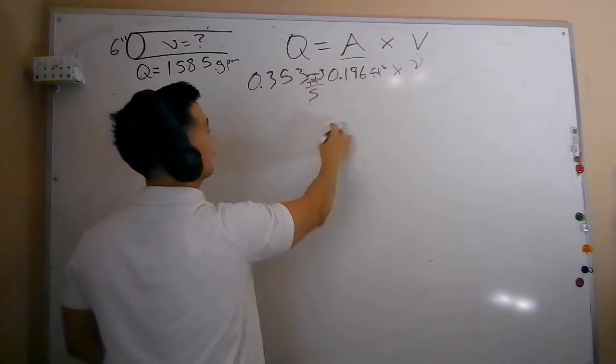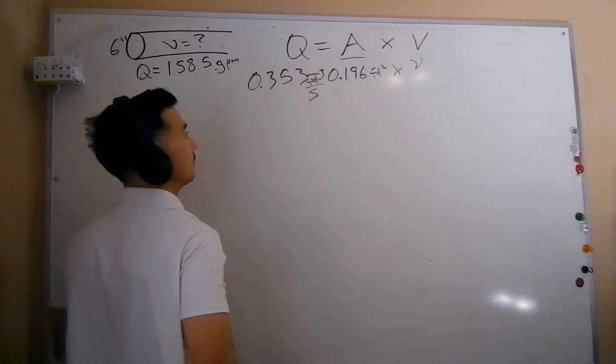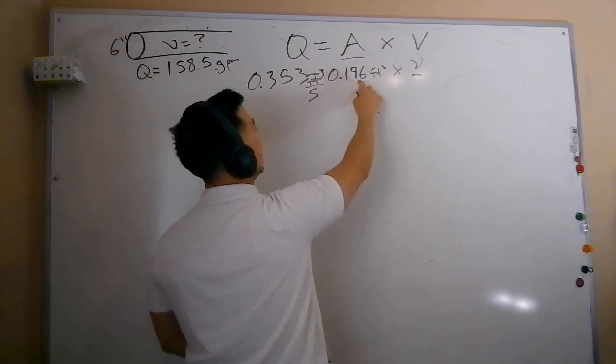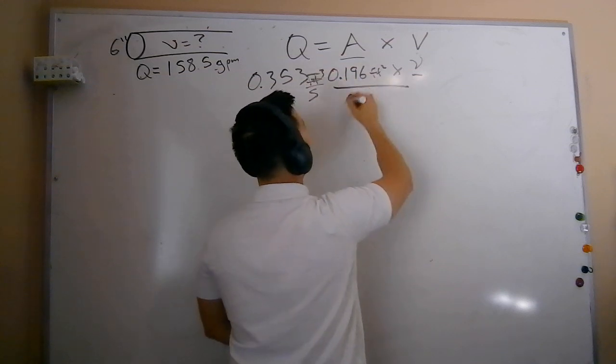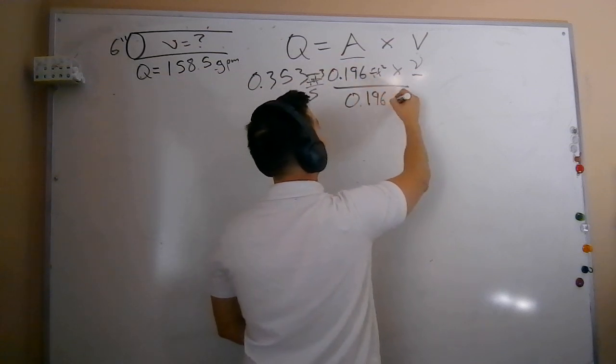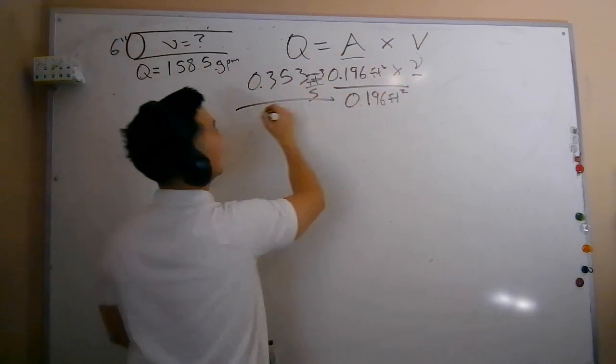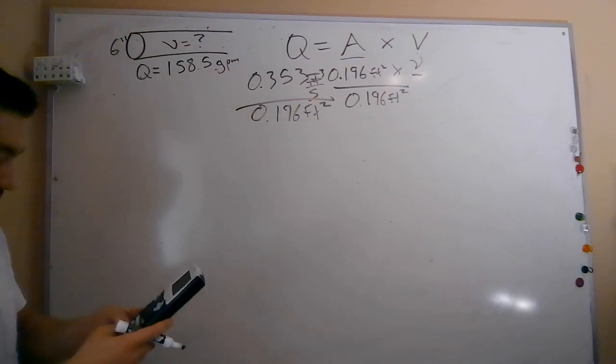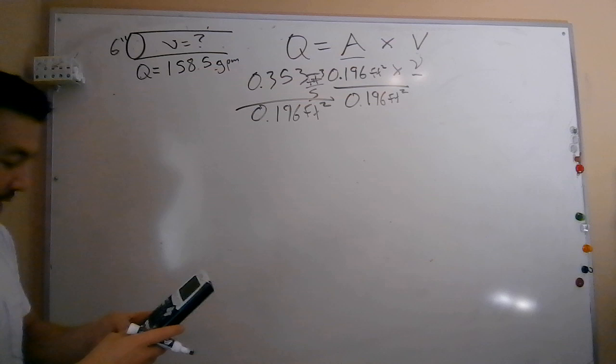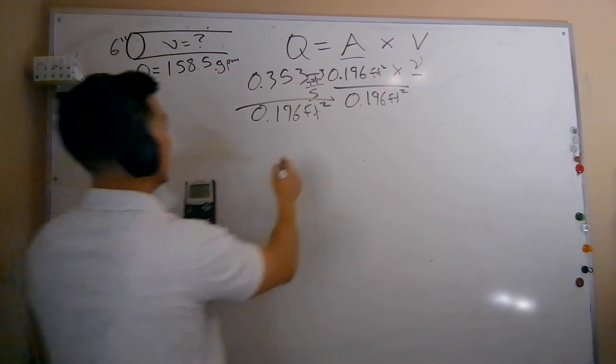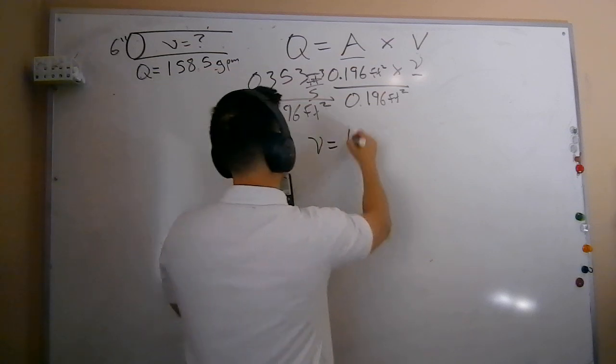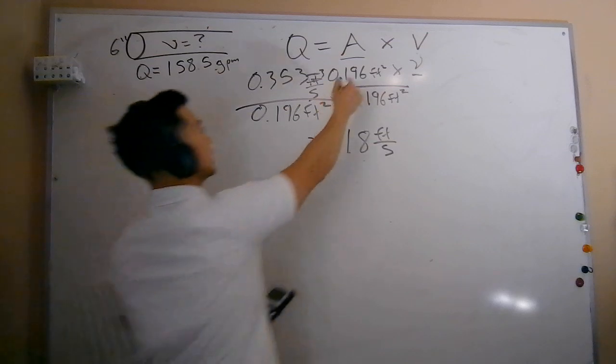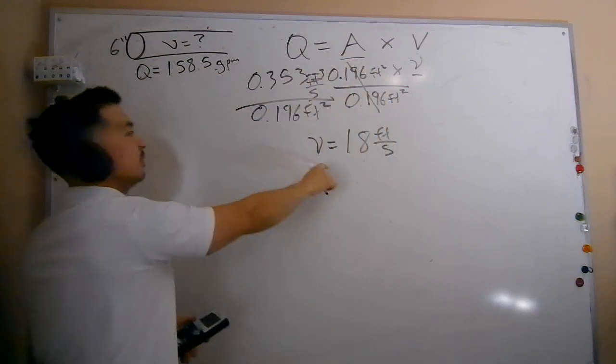So another way to think about this problem when we're doing it is just very simple algebra. I need to get velocity by itself. So how do I do that? Well, I need to get rid of whatever is on the same side of the equal sign here. So I'm going to end up dividing by my area here, 0.196 square feet. What I do to one side, I need to do to the other side, 0.196 square feet. So I end up with 0.353 divided by 0.196. And I get to a velocity equal to about 1.8 feet per second. So the math is pretty easy. 1.96 cancels out here. Divide those two out, I get this 1.8.